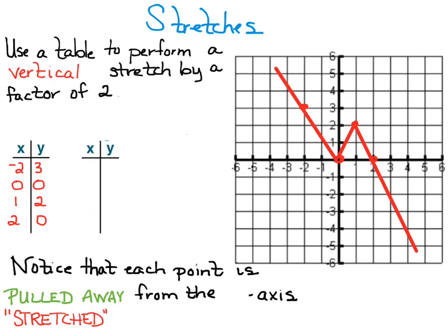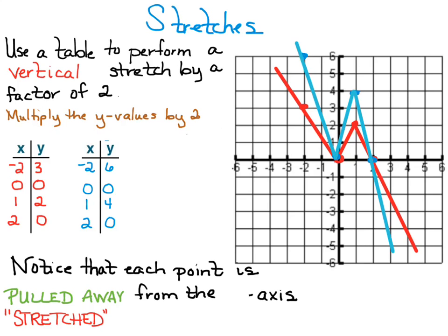Now let's take a look at the same situation but this time we're going to perform a vertical stretch by a factor of two. Vertical is the y-axis, so think of pulling on the y-axis to stretch it. What we're going to do is multiply the y values by two. The resulting table of values follows. Notice that each point is pulled away from the x-axis — it's a vertical stretch but it's being pulled away from the x-axis.